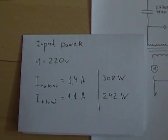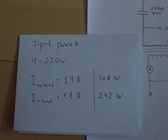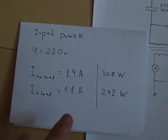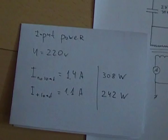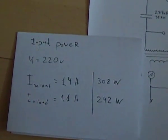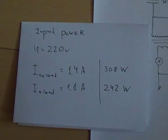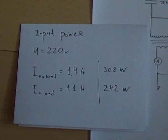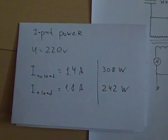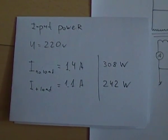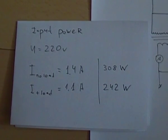And the input power data is: with no load we are achieving 300 watts of consumption, and when we place a load in the circuit, it drops to 240 watts.